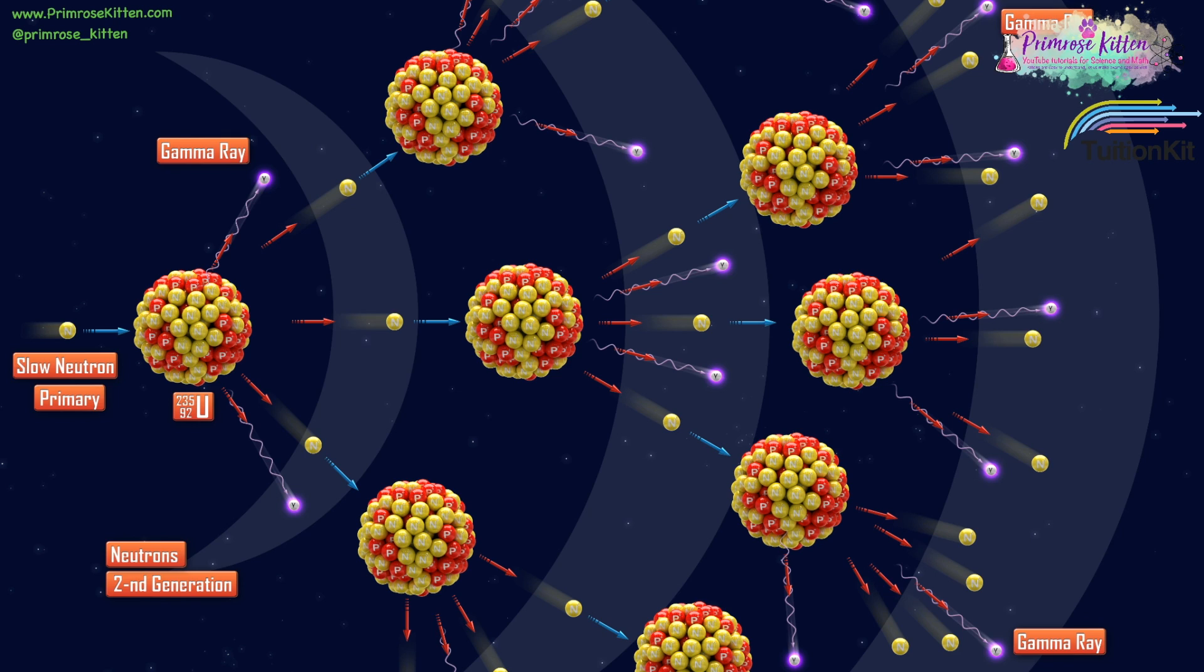This neutron goes in and smashes it apart, a bit like smashing the balls apart if you're playing pool or snooker. Lots of things come off it - one, two, three, and the exam would like you to do at least three: new neutrons, smaller nuclei, and energy.